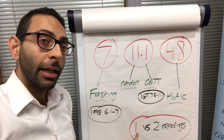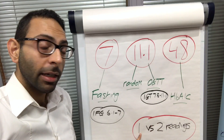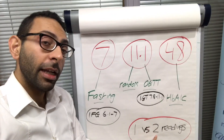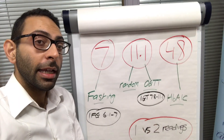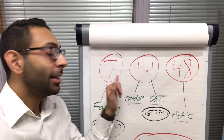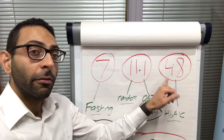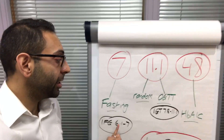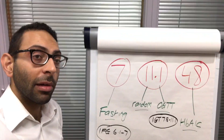Remember you need one reading if they're symptomatic, or two readings if they're asymptomatic. And there are two more things you need to remember alongside this.